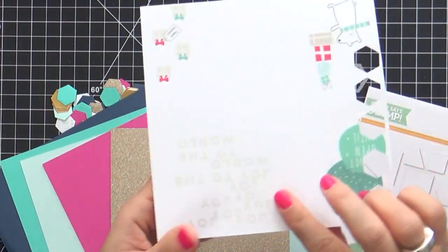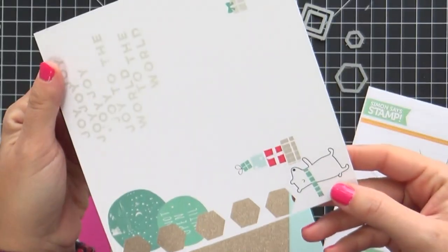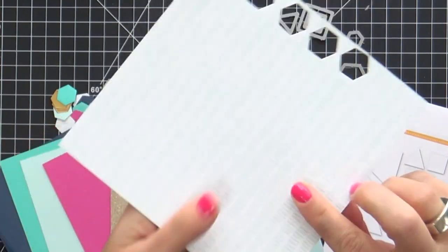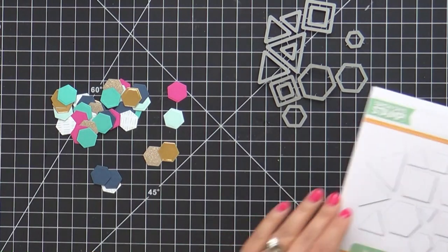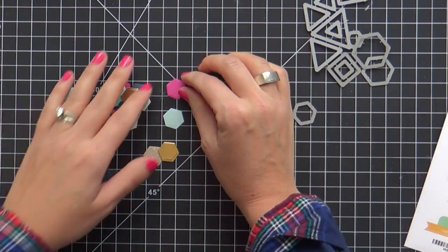And then I did one pattern paper, kind of a coordinating color. This is Pinkfresh Studio. I think that's what you call it. Came out of a card kit. But you can buy the pattern paper individually, also in the Simon Says Stamp store.